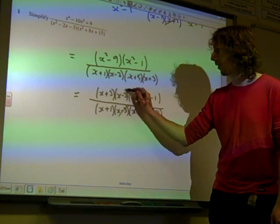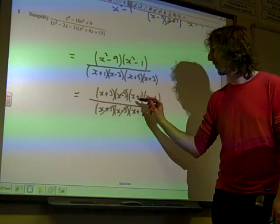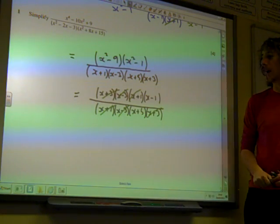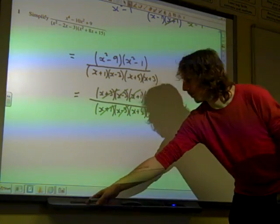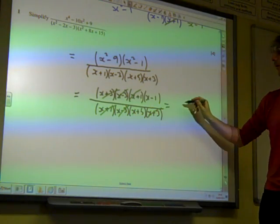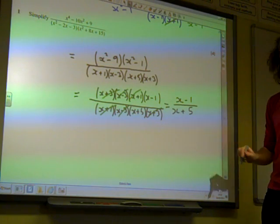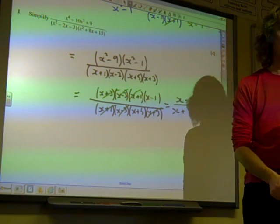So we get rid of the x minus 3's, the x plus 1's, and the x plus 3 there, and we are left with at the end of all of that, with x minus 1 over x plus 5. And that would be it.